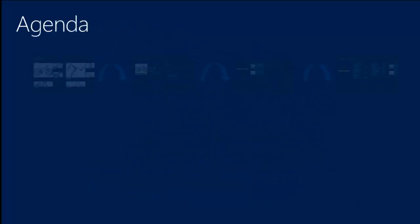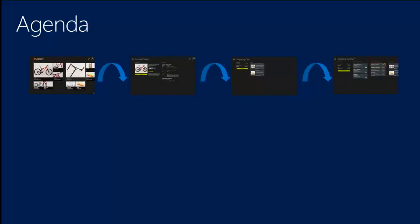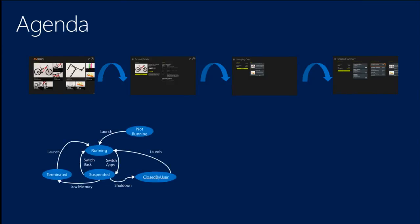What I'm going to go through: first I'll talk about the basic navigation schemes in a Windows Store application, the different styles of navigation and the fundamental APIs used to accomplish navigation. Then we'll talk about the application lifecycle, which is a really important aspect of building a Windows Store app — it's very different from smart client technologies like Windows Forms or WPF or Silverlight versus web applications.